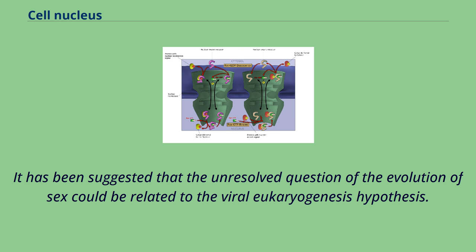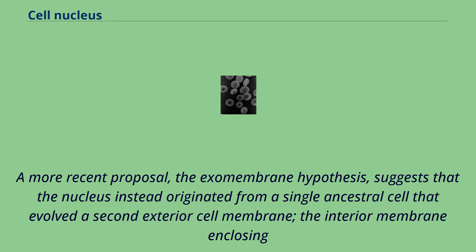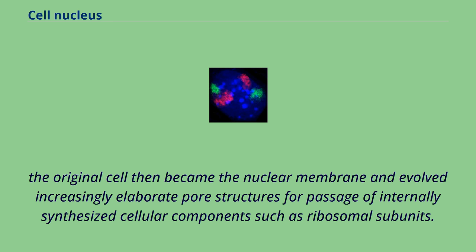A more recent proposal, the exomembrane hypothesis, suggests that the nucleus instead originated from a single ancestral cell that evolved a second exterior cell membrane. The interior membrane then became the nuclear membrane and evolved increasingly elaborate pore structures for passage of internally synthesized cellular components such as ribosomal subunits.